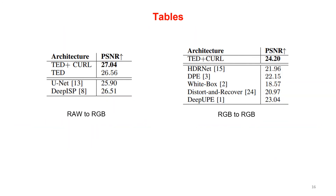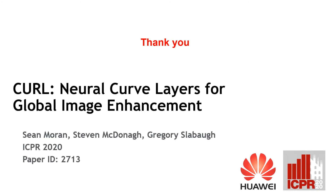Numerical results are presented in the paper. For the ISP task transforming raw-to-RGB, TED plus CURL produces approximately 0.5 dB improvement in PSNR on the Samsung S7 dataset. On the RGB image enhancement problem, TED plus CURL produces over 1 dB improvement compared to deep UPE on the MIT Adobe 5K dataset. That concludes our presentation. Please see our paper for more details. Thank you.